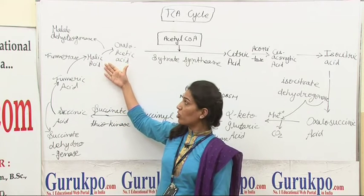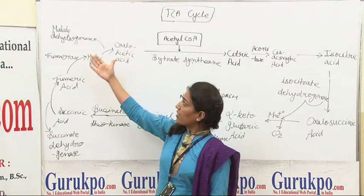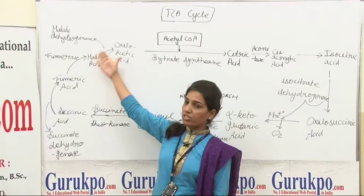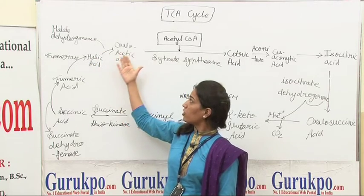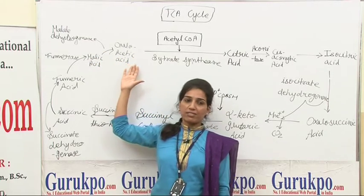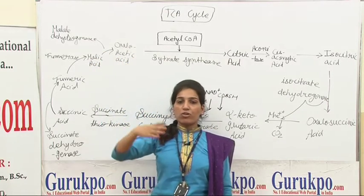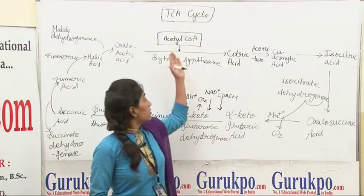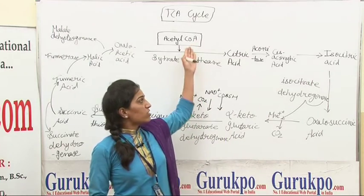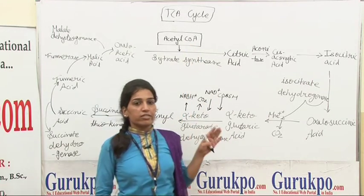This fumaric acid converts into malic acid by the enzyme fumarase, and malate dehydrogenase enzyme converts malic acid into oxaloacetic acid. Again this oxaloacetic acid reacts with acetyl coenzyme A and the cycle continues.